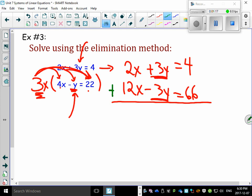So add this. You're going to notice that this is 3y, and this is negative 3y, which is going to eliminate. This is 2x plus 12x, which is going to give you 14x, equals to 4 plus 66, which is going to give you 70.